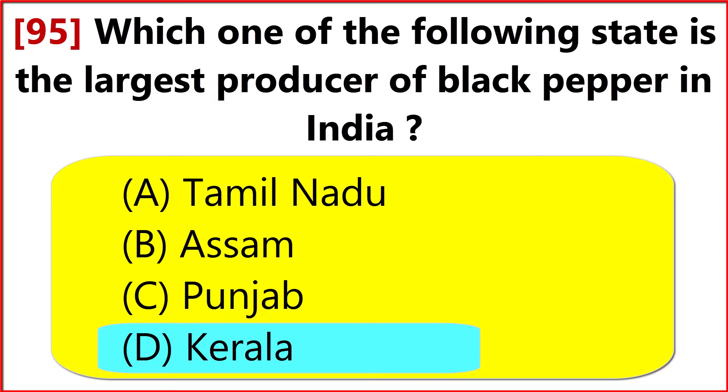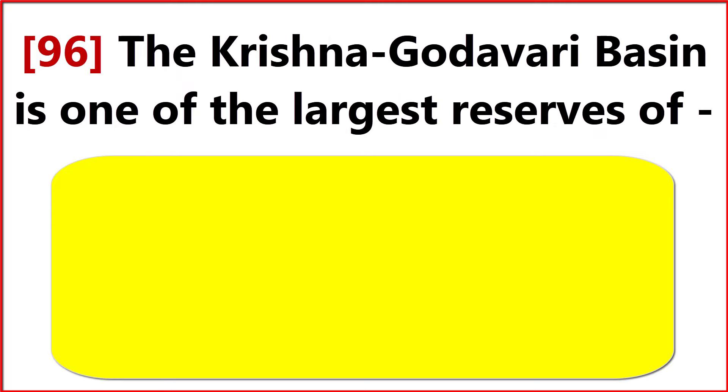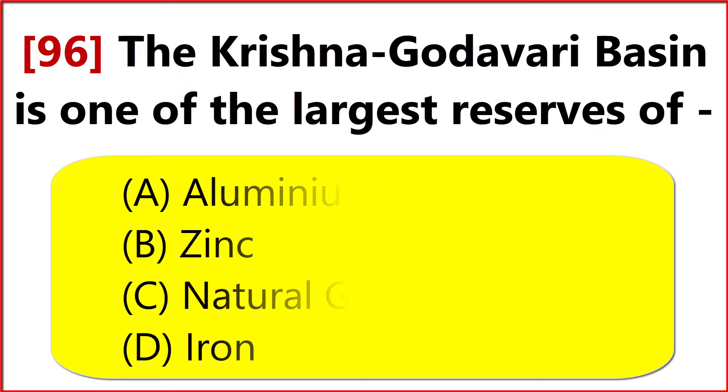Which one of the following states is the largest producer of black pepper in India? Option D: Kerala.